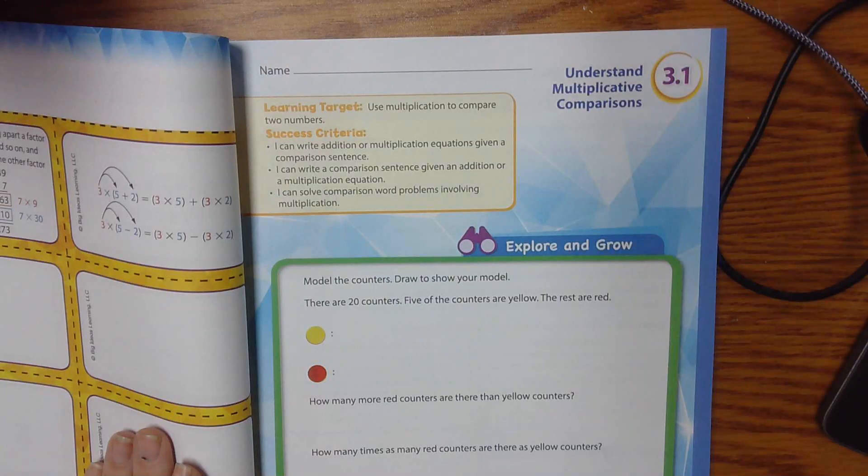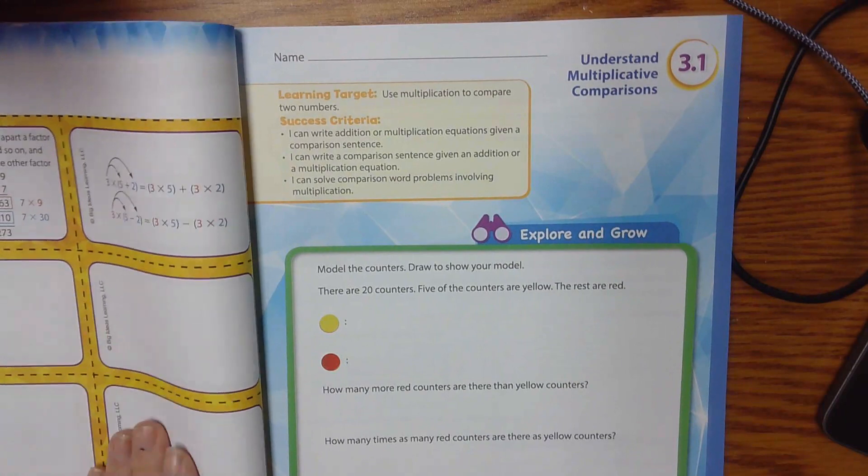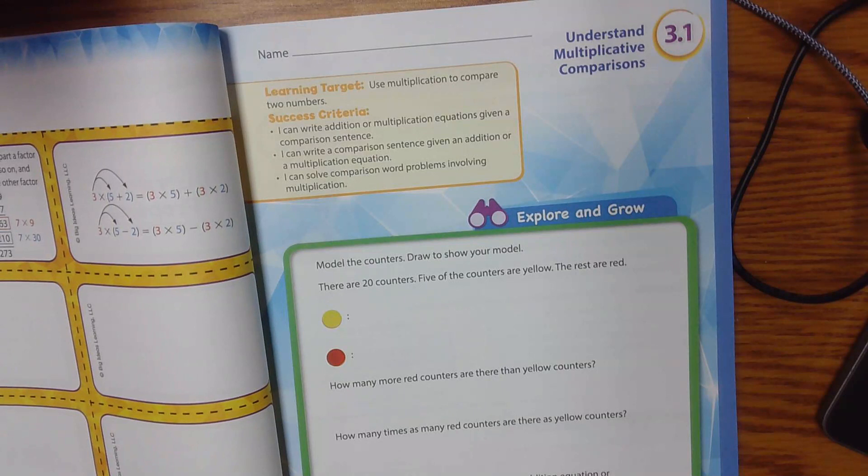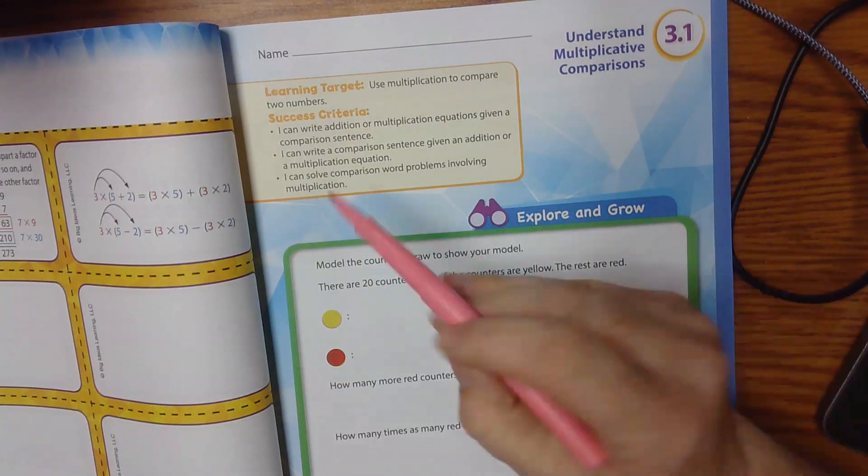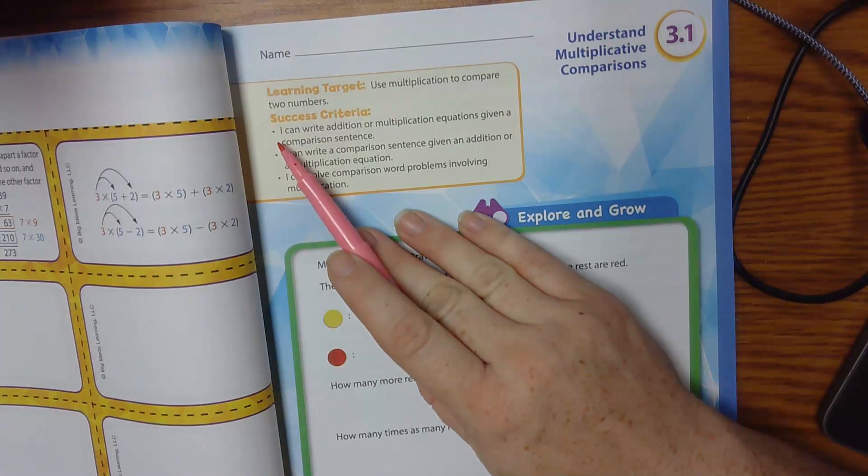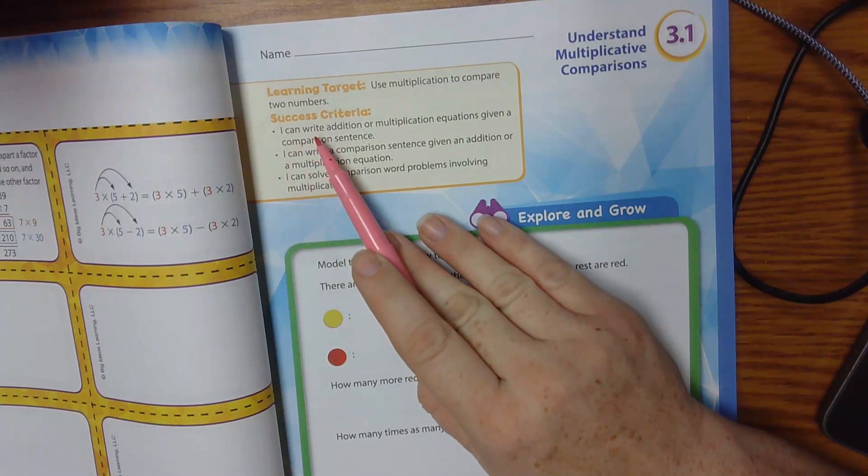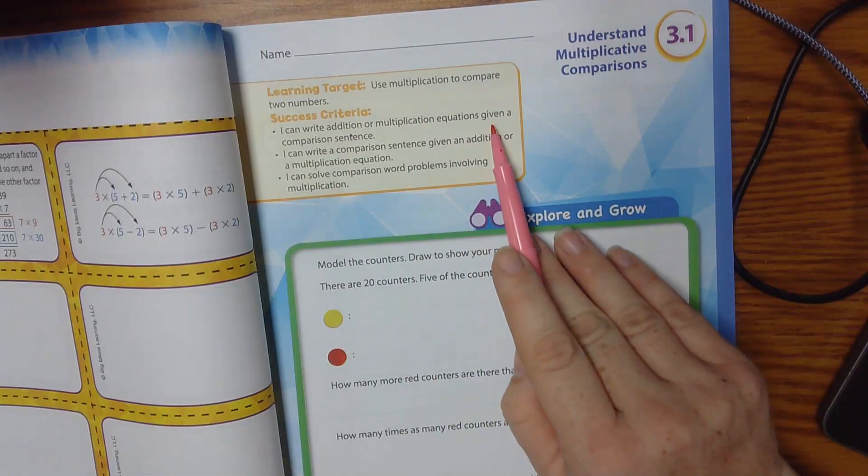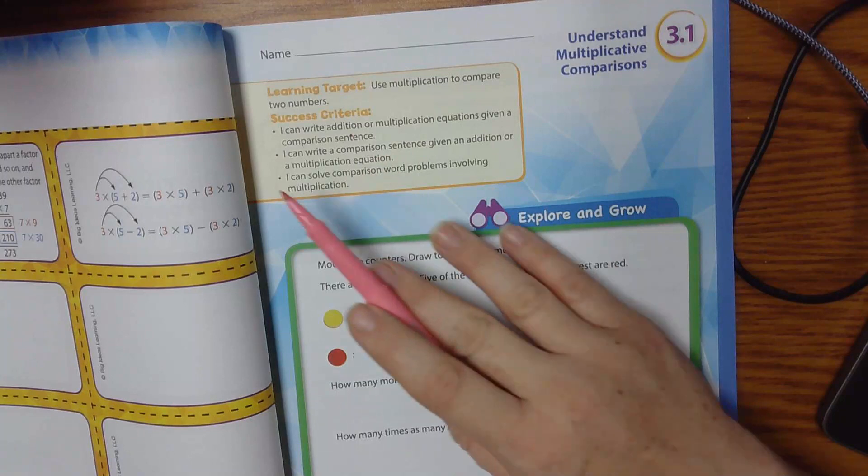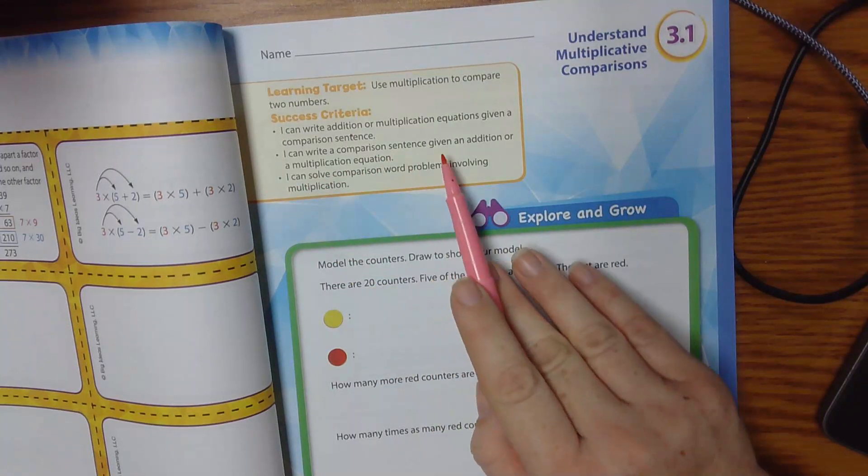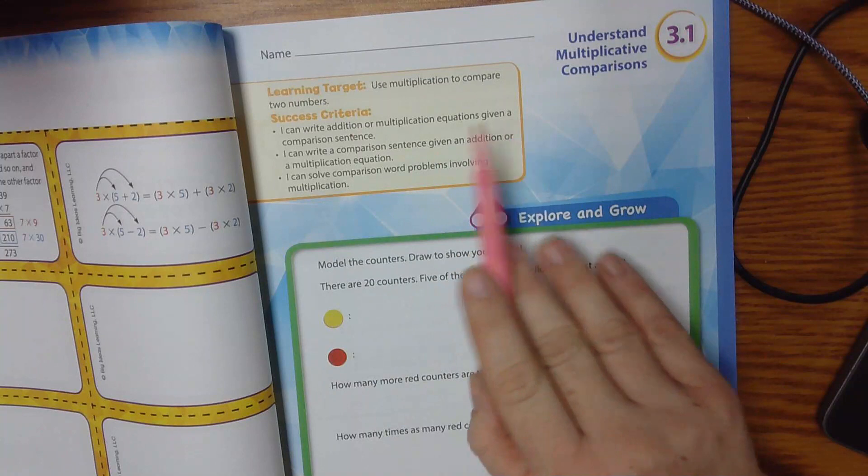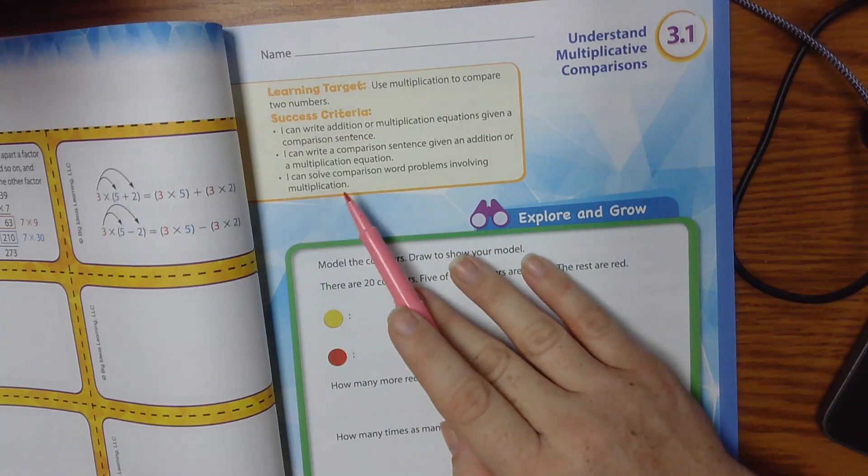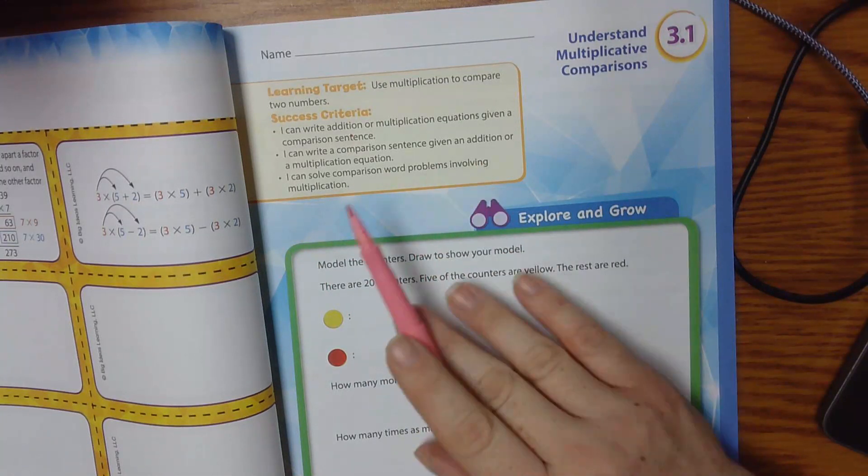Okay, let's take a look at lesson 3.1 in our math book. We're going to use multiplication to compare two numbers. I want you to read the success criteria out loud to me and stay together. Ready?